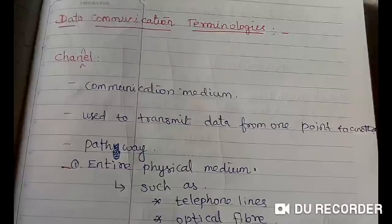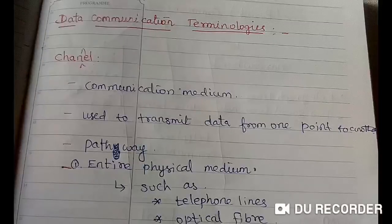Hi friends, in this video on data communication technologies, we will look at basic terminologies. A communication medium or channel is the pathway used to transmit data from one point to another — from source to destination. It is otherwise called a pathway or channel.